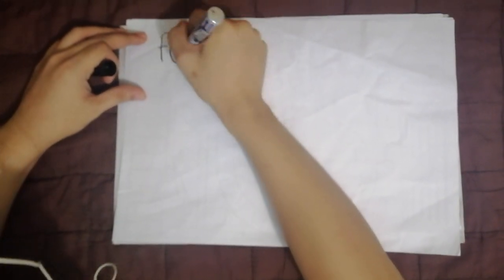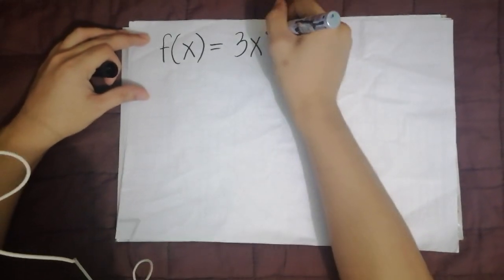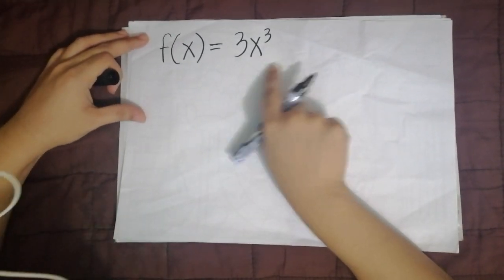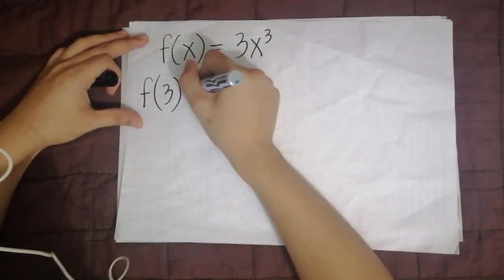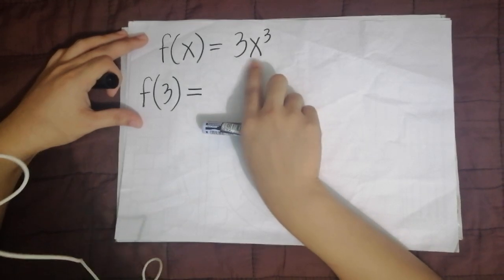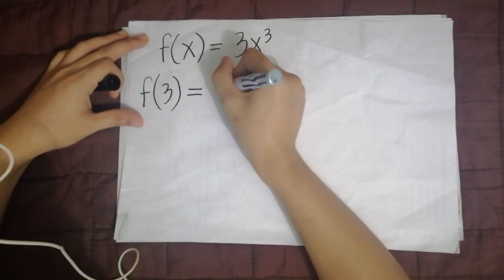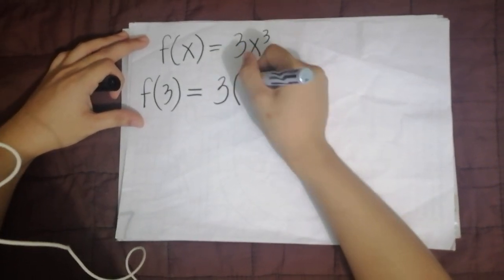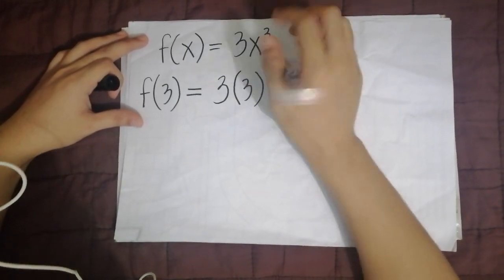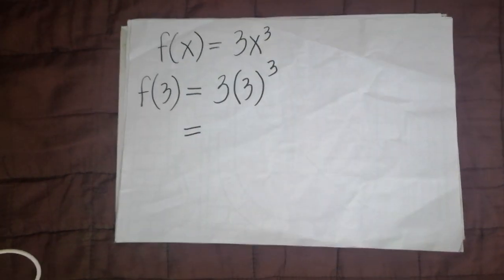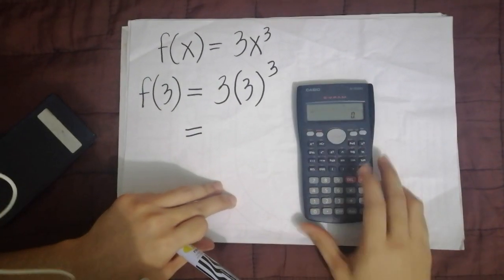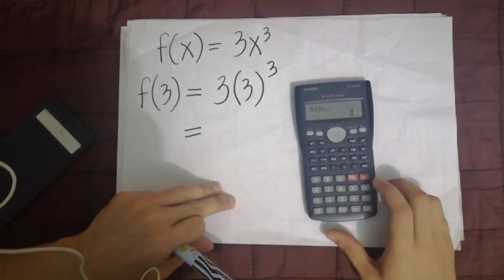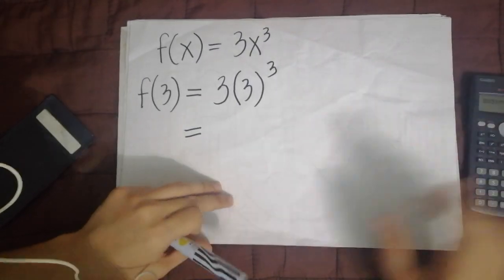So for the solution, the equation we will use is f of x equals 3x cubed. We don't need to include the restriction in the solution. So we evaluate f of 3. Replace all x in the expression with 3. So copy the 3 — the leading numerical coefficient — then replace x with 3, then put the exponent of 3 also. You can just press this on your calculator: 3 times (3) raised to 3, equals 81.